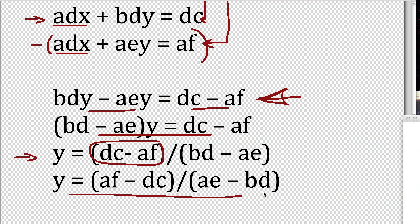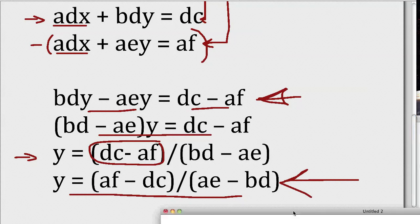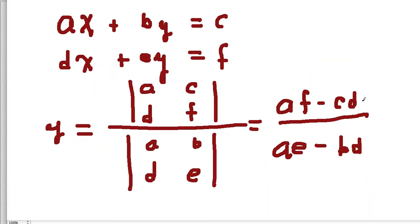I have AE minus BD. So you can see that this expression right here is the same thing that we have with Kramer's Rule.